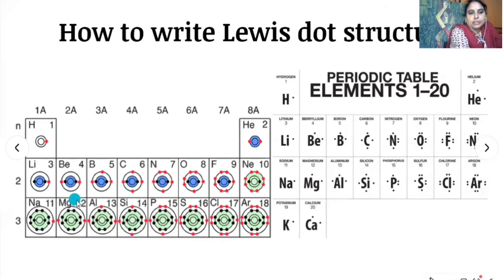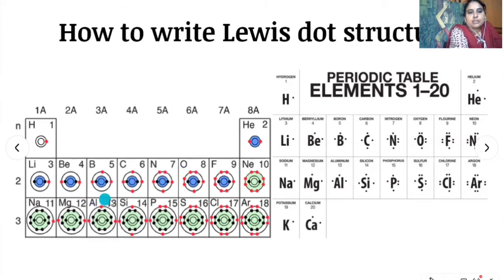For beryllium, atomic number is four, electronic configuration is 1s², 2s². The first shell contains two electrons and the outermost second shell contains two electrons, so the valence electrons are two — represent with two dots on beryllium. For boron, atomic number is five, electronic configuration is 1s², 2s², 2p¹. The inner core electrons are two and the outermost shell contains three electrons, so write three dots on boron.